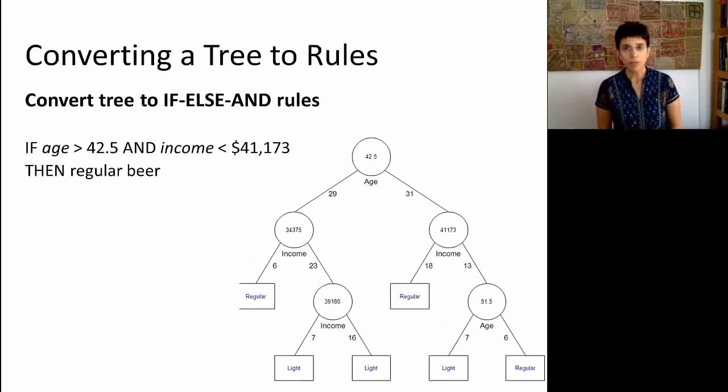Now, we talked about the tree being an interpretable classifier, and the reason is that we can convert this tree into a set of if-then rules. For example, if we take this particular tree here,